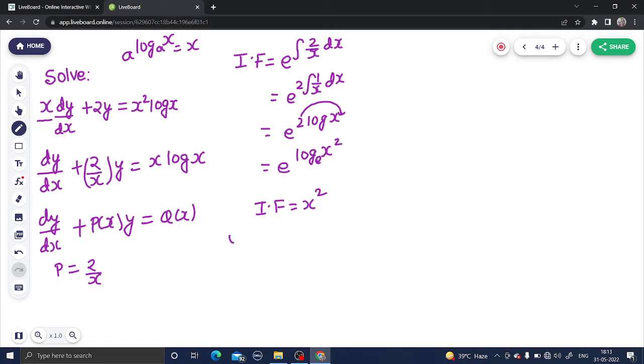Now what is your final solution? The final solution is y times integrating factor equals integral of Q. What is Q? Q is x·log(x) times integrating factor, which is x², and you will have a dx here. So you are getting y·x² = ∫x³·log(x) dx. You will take this as the first function, this as the second function, obviously because you don't know the integration of log(x).